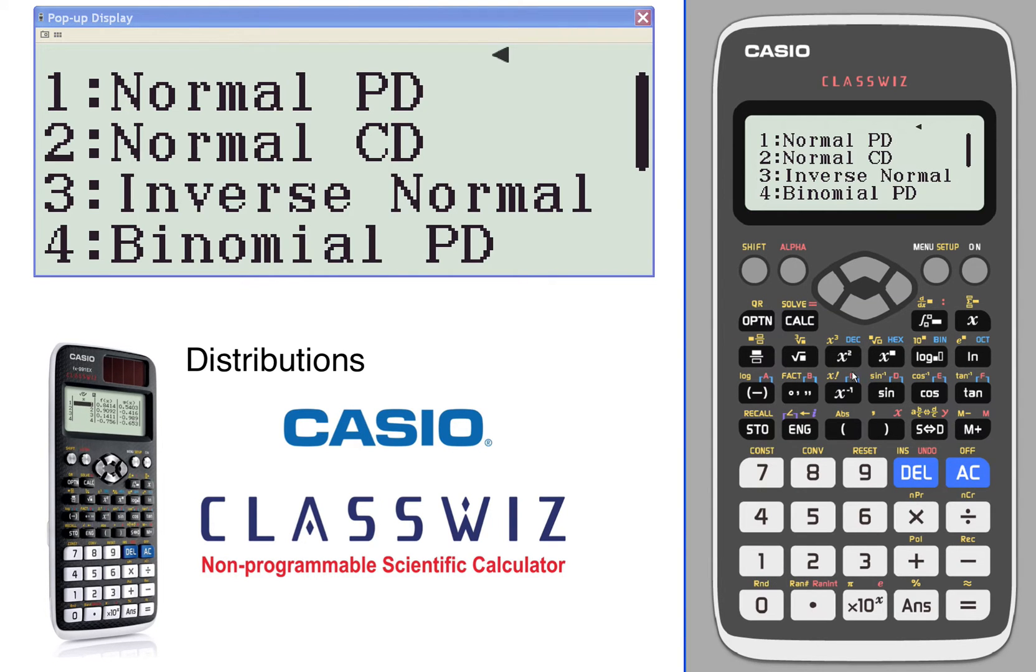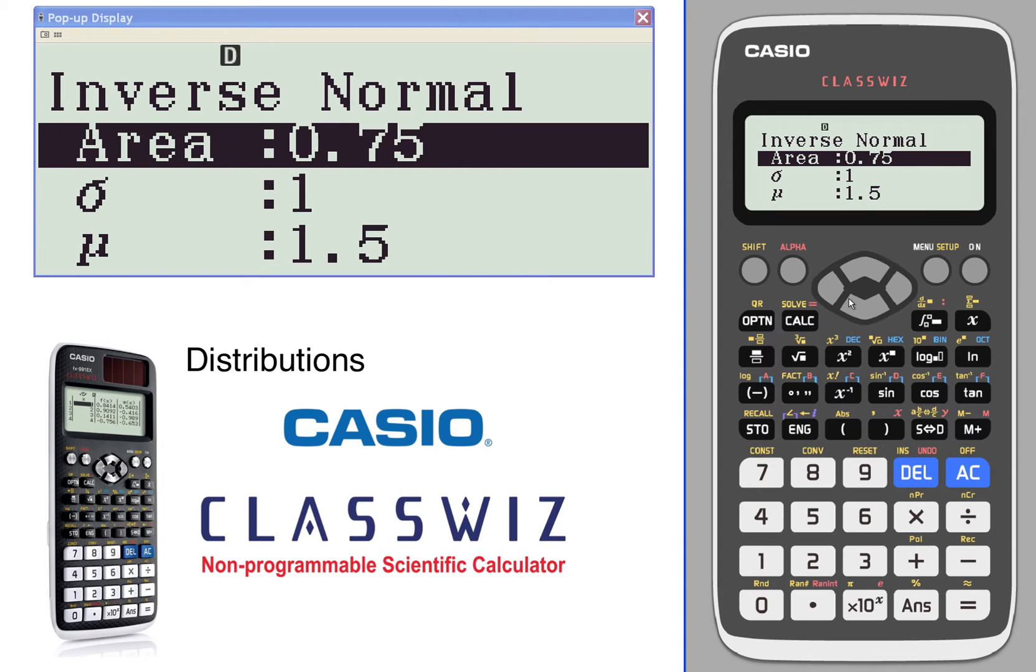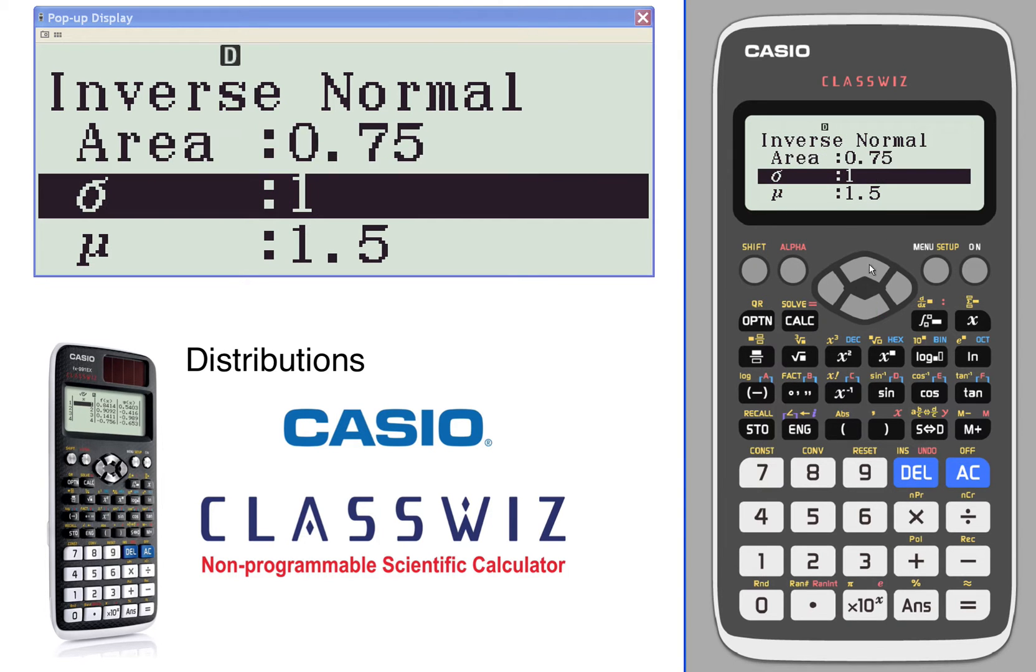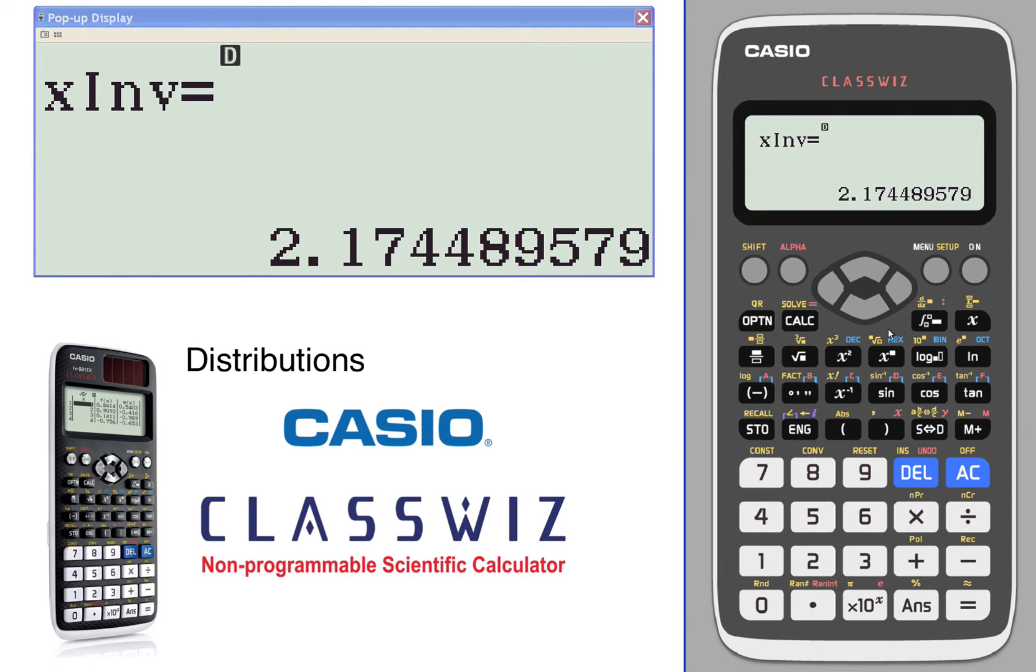Let's select a different type. We'll do an inverse normal calculation. Given an area of 0.75 with a mean of one, standard deviation of 1.5, this is looking at area to the left. So what value, what z-score will that generate? That gives you 2.17.